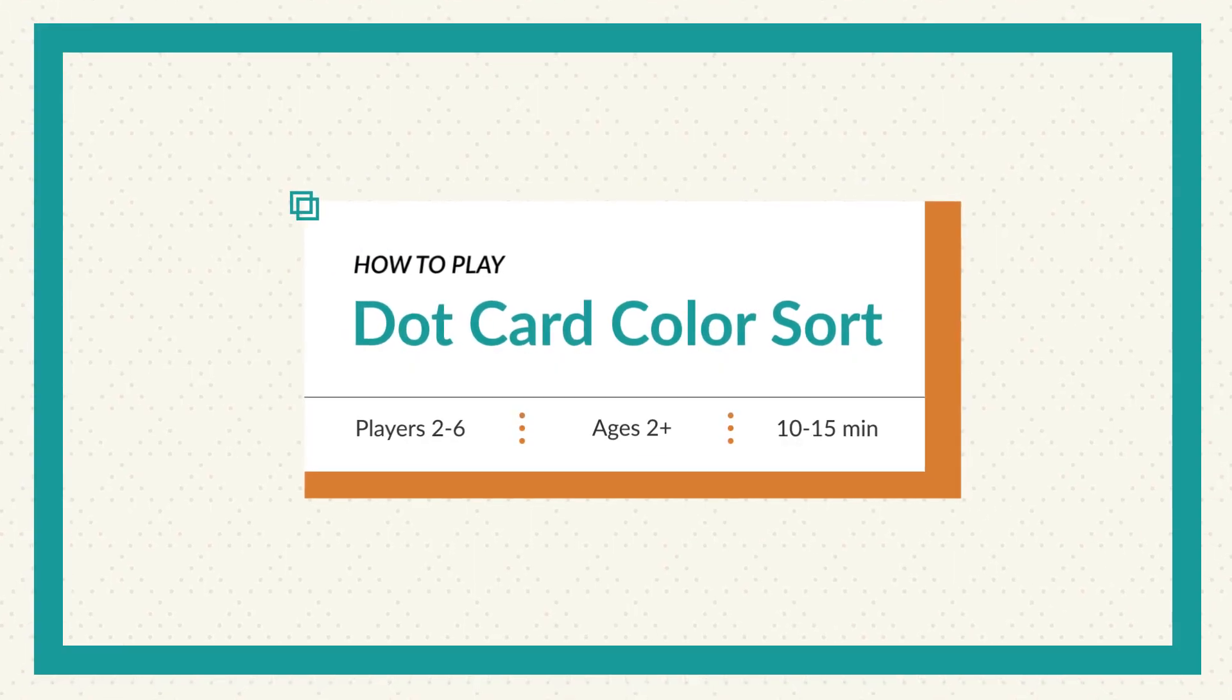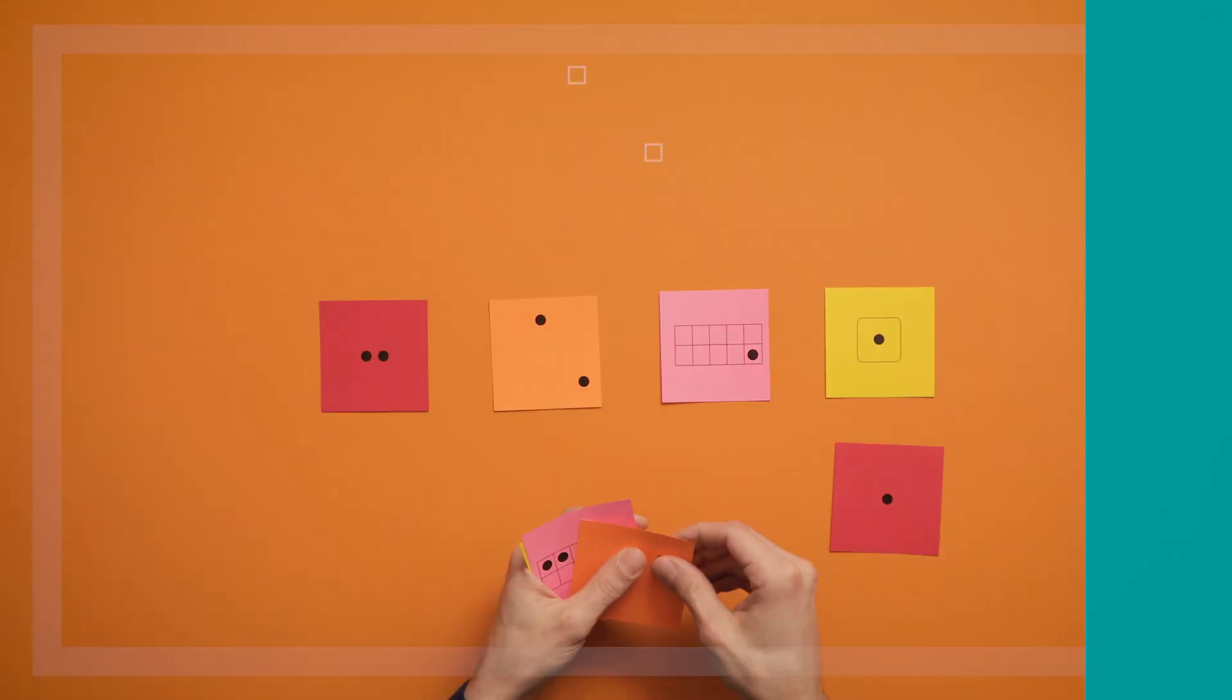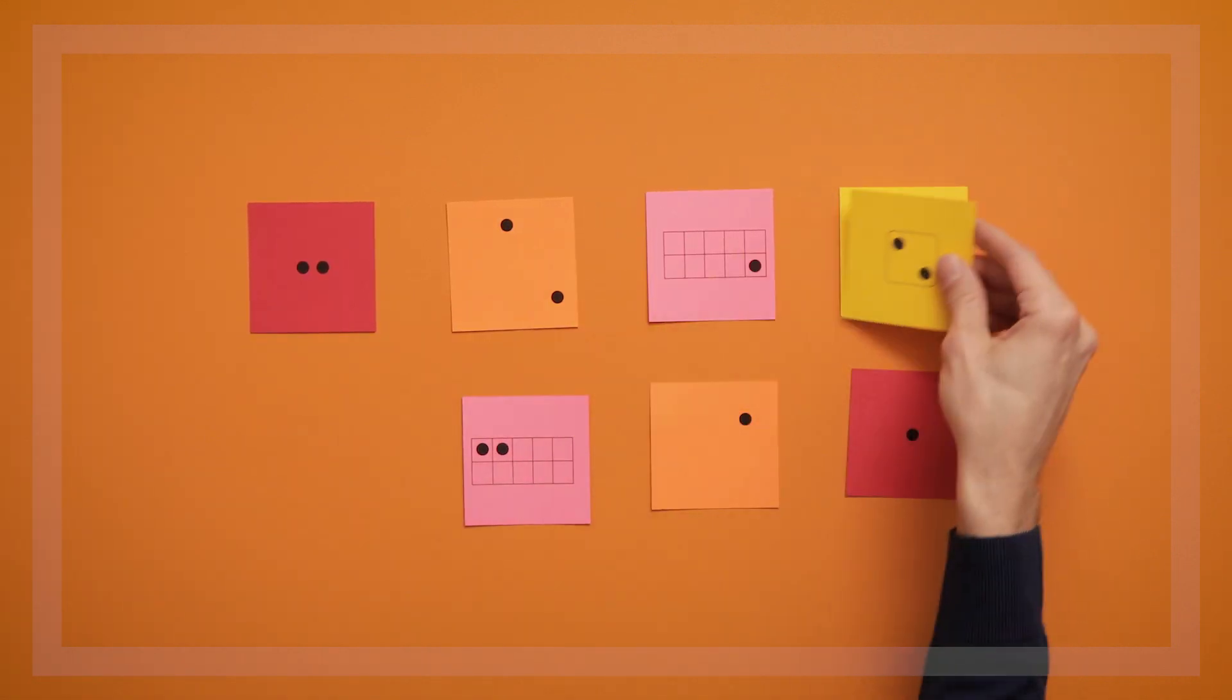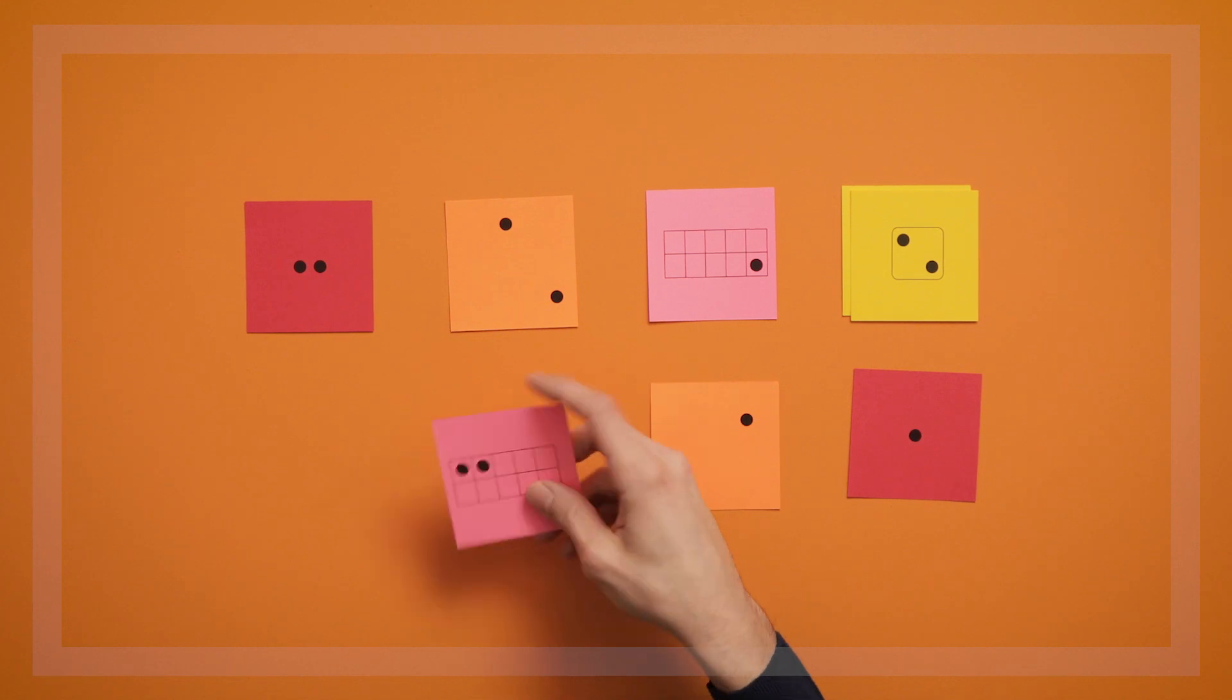This is a game called Dot Card Color Sort. The goal of the game is to sort the dot cards by color. This is a great game for young children who are just starting to explore the dot cards.